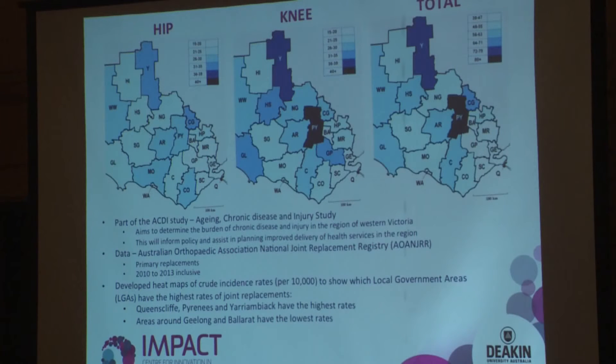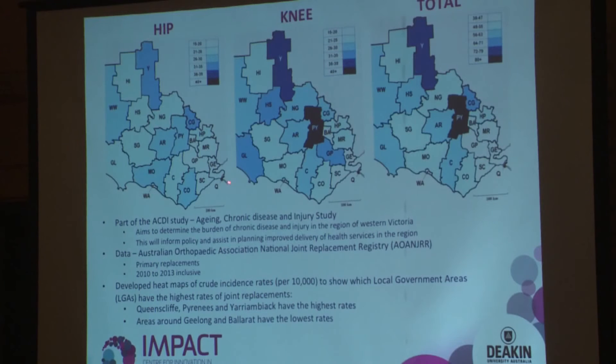These are the maps for hip replacements, knee replacements, and total — meaning all the different types of replacements at any site — for the region of western Victoria. The important places to note here are Geelong, Ballarat, Warrnambool, and Horsham, just to give you an idea of the size of our study region. Hip and knee are on the same scale, so in general there are more knee replacements than hip replacements. For hip replacements, the highest incidences are in Central Goldfields and in Queenscliff. For knee replacements, it's high in Pyrenees, Queenscliff again, and an area called Yarriambiack, which is a relatively remote location.